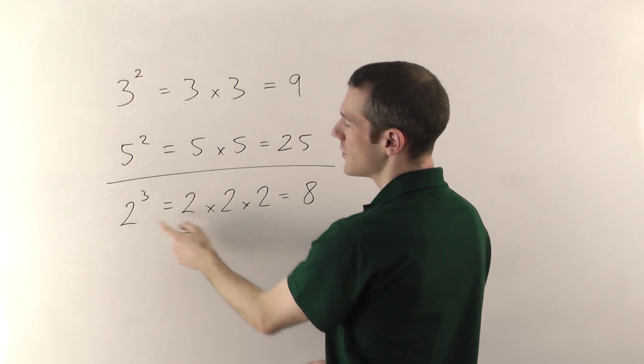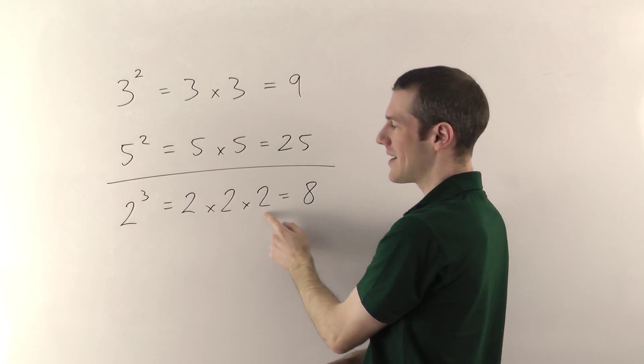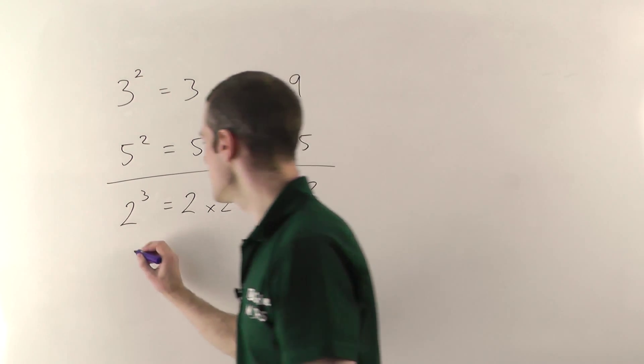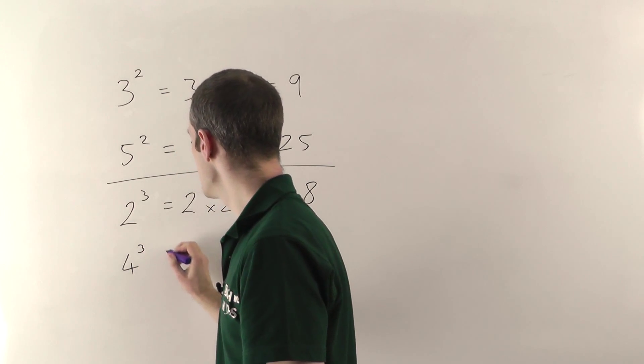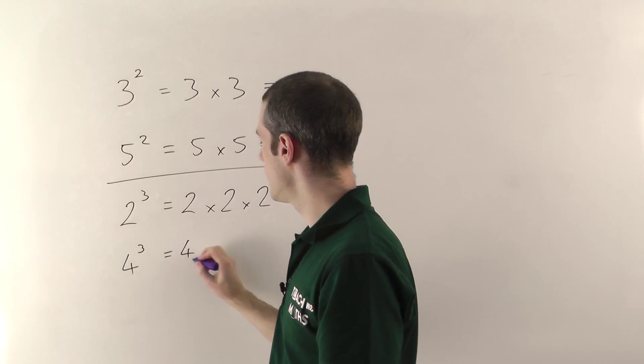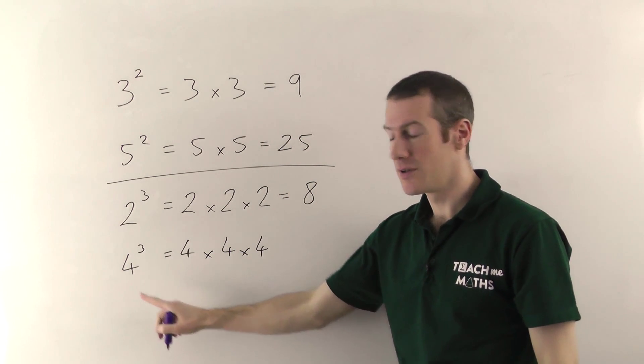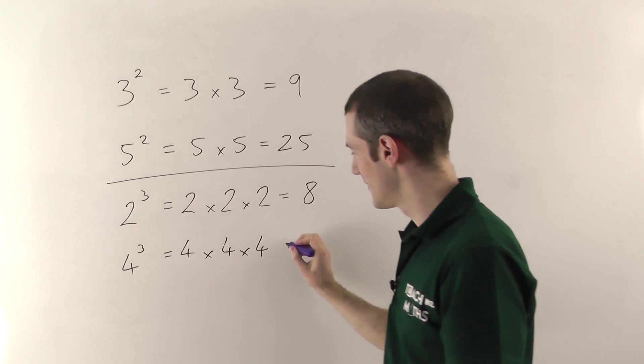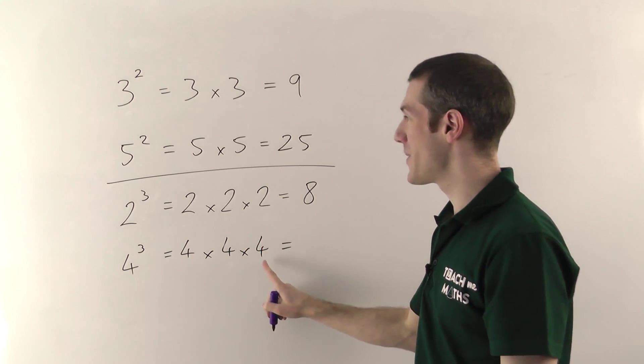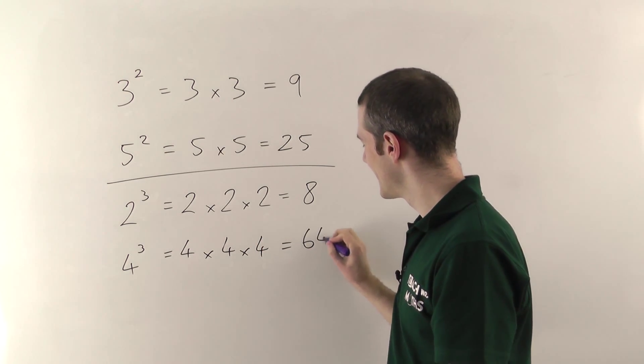So if you're cubing, you take whatever the base number is, the 2 in this case, and you times it by itself 3 times. So the 3 of them multiplying together. One more example, let's have 4 cubed, so that means we need 3 4's multiplying together. So it's 4 times 4 times 4. Not 3 times 4, 3 4's all multiplying. Well 4 times 4 is 16, times that by another 4, that's a little bit trickier, I think you're going to get 64.